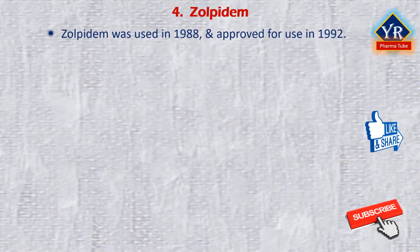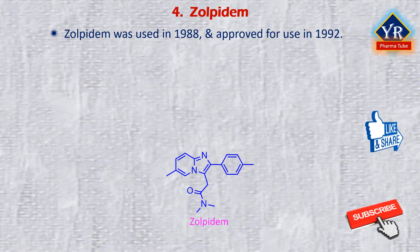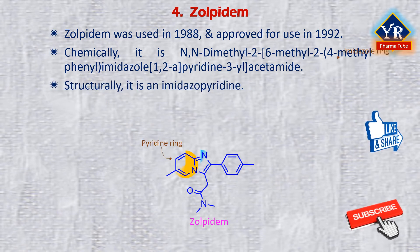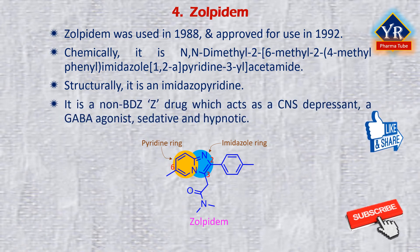The last drug of this lesson is zolpidem. Zolpidem was first used in 1988 and approved for medical use in the US in 1992. Chemically, it is N,N-dimethyl-2-[6-methyl-2-(4-methylphenyl)imidazo[1,2-a]pyridin-3-yl]acetamide. Structurally, it is an imidazo[1,2-a]pyridine compound having a 4-tolyl group at the second position, an N,N-dimethylcarbamylmethyl group at the third position, and a methyl substituent at the sixth position.